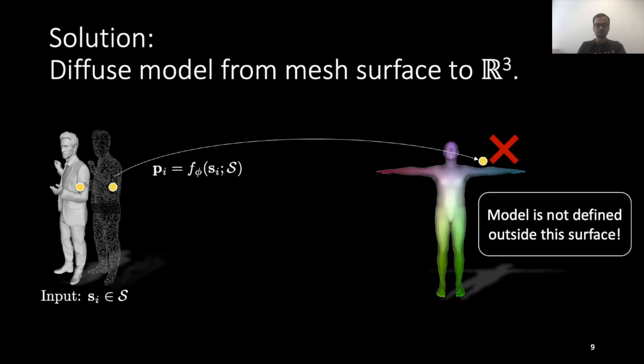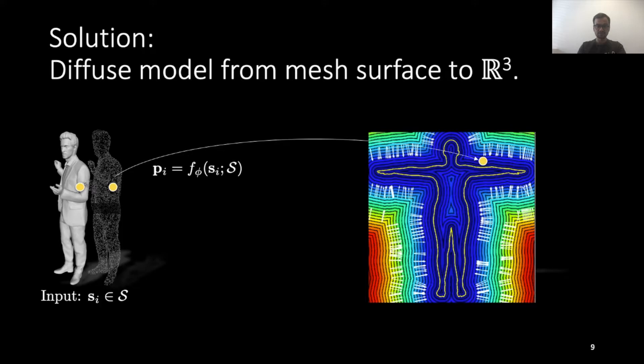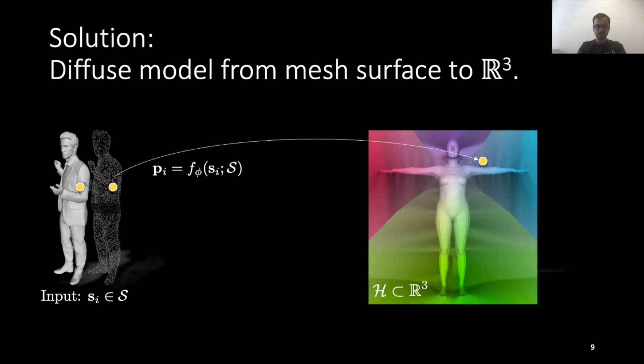We present an alternative to the problematic UV parametrization. We use the distance transform of the model surface to diffuse the model function from surface to R³. This allows us to shape and pose the network predicted correspondences that are not on the model surface.